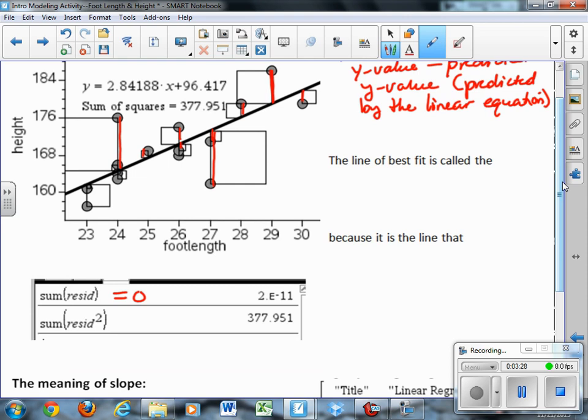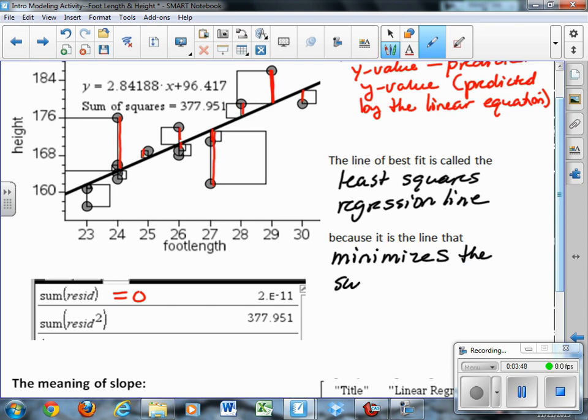And so let me tell you how that number is used to find the line of best fit. The line of best fit is called the least squares regression line because it is the line that minimizes or makes as small as possible the sum of the squared residuals.